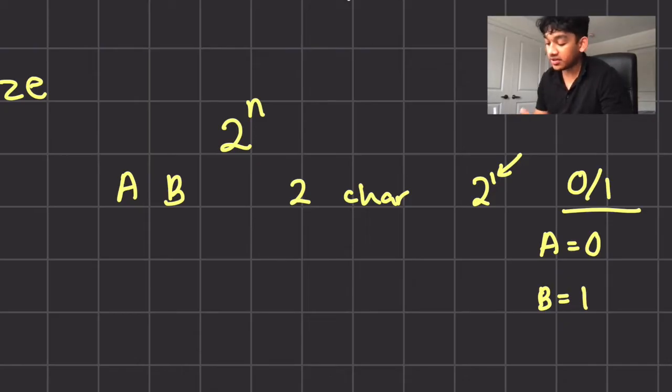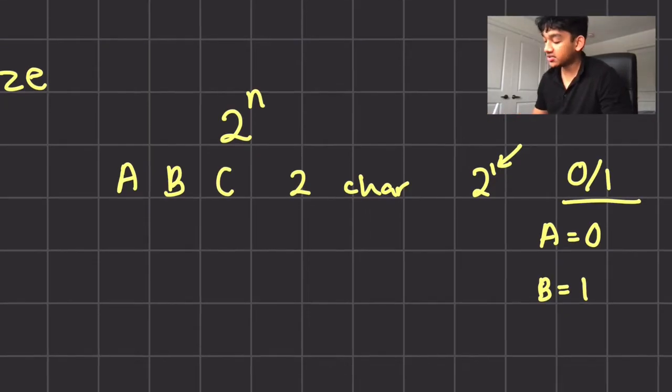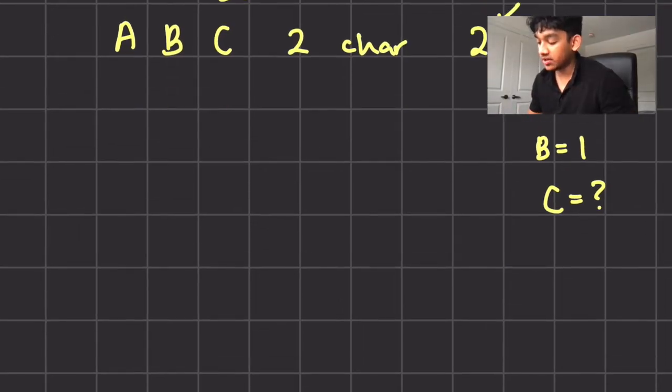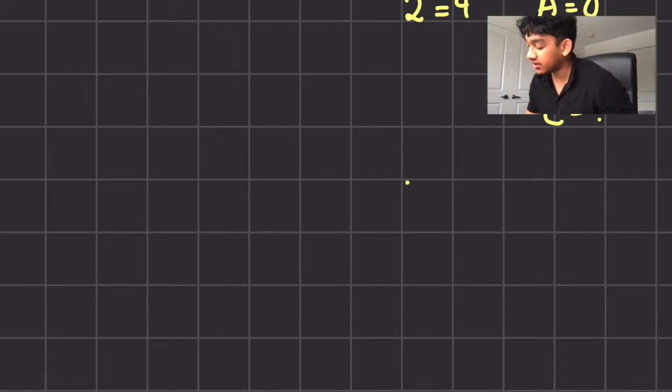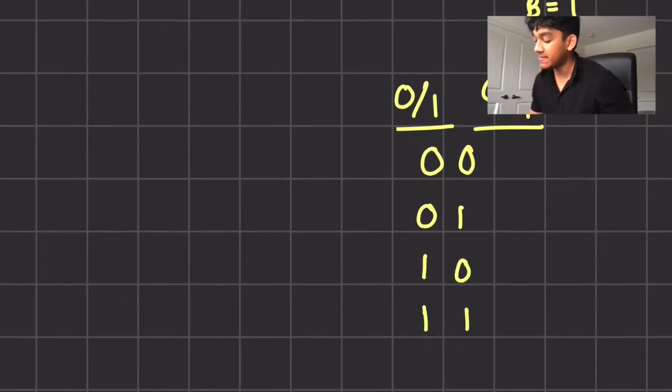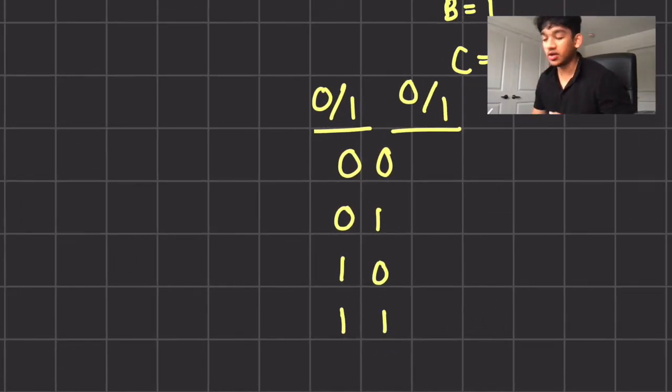But let's say we add a third character, let's say C. All of a sudden, what could C equal with one bit because we already took 0, we already took 1, there's no way of doing it. So what we do is we use the next power to 2. So 2 to the power 2 is gonna be 4. And we can see this by having two bits right here. So 0 and 1, 0 and 1, and we're gonna have four different combinations now. We're gonna have 0, 0, 0, 1, 1, 0, 1, 1.